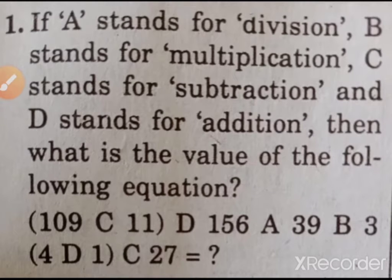If A stands for division, B stands for multiplication, C stands for subtraction and D stands for addition, then what is the value of the following equation? 109 C 11, D 156, A 39, B 3, 4, D 1, C 27 equal to what?